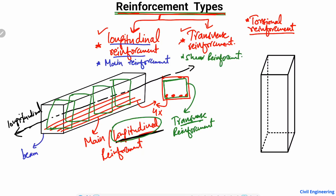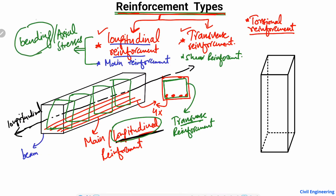Keep in mind that the main reinforcement — the longitudinal reinforcement — is provided to take the bending stresses or the axial stresses. In the case of a beam, they take the bending stresses, while in the case of a column, they take the axial stresses.